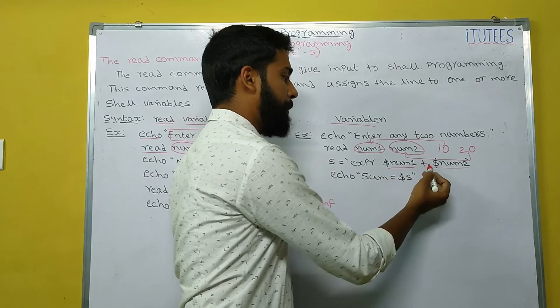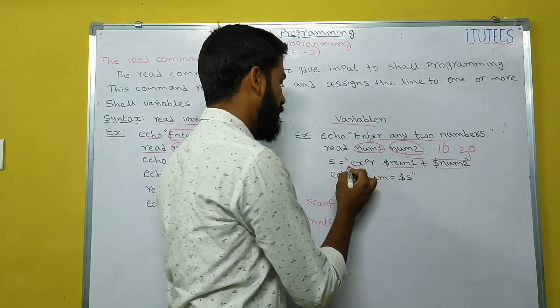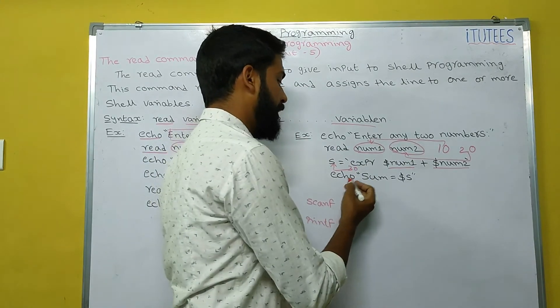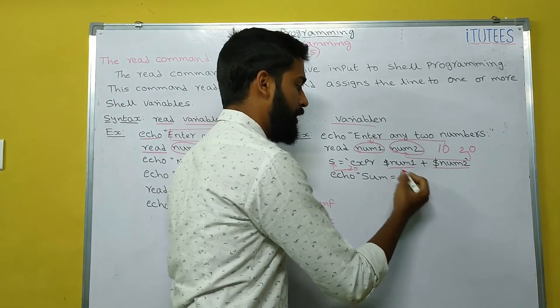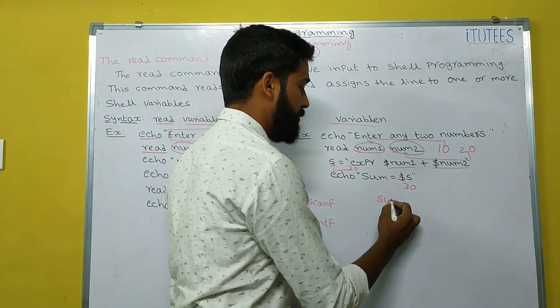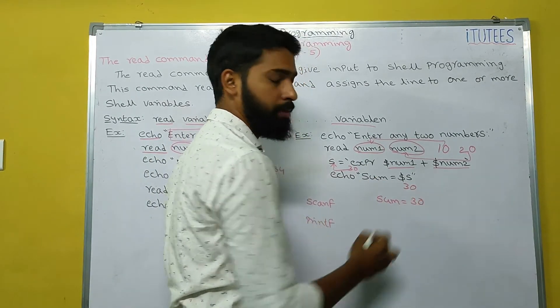Dollar number1 plus dollar number2. Now, 10 plus 20, so 30 is assigned to s. And we can print echo sum equals to dollar s - 30. Now, it prints output as sum equals to 30.